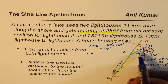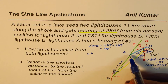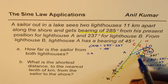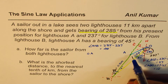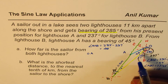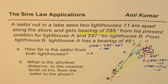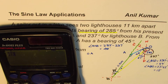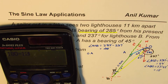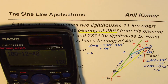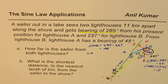Now in triangle AOB we know two angles: 48 degrees and 12 degrees. We know one side, which is 11 km. The third angle is 180 minus 12 minus 48, which is 120 degrees. So we have all the angles of this triangle and can find each side.